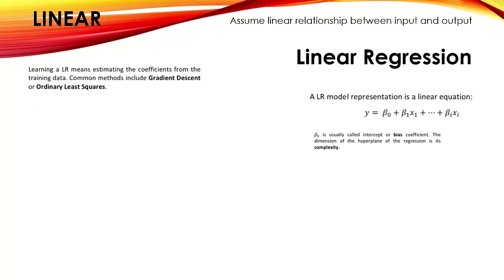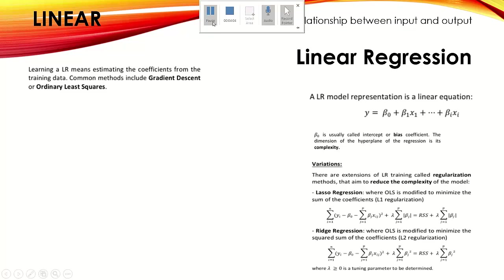Linear regression is a linear model that assumes a linear relationship between input and output. The equation is: Y = β₀ + β₁X₁ + ... + βₙXₙ, where β represents bias coefficients. The number of dimensions is the complexity of the model. Linear regression means estimating the coefficients from the training data, which can be done using gradient descent or ordinary least squares.